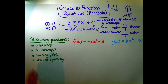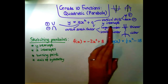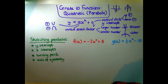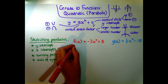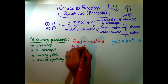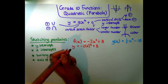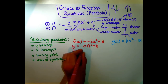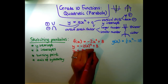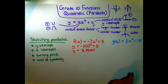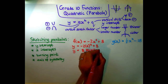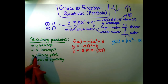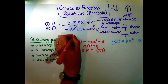For both graphs we start with the y-intercept. You can just read off the q value, or let x equal zero. For f(x), letting x = 0 gives y = -2(0²) + 8 = 8. So y equals 8, and the y-intercept is the point (0, 8). It's important to write down the point so we don't confuse it with points of intersection.